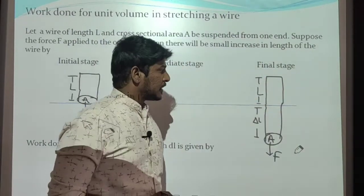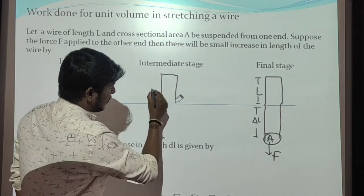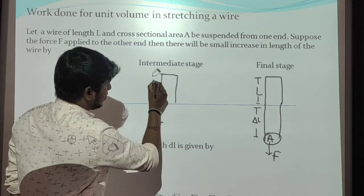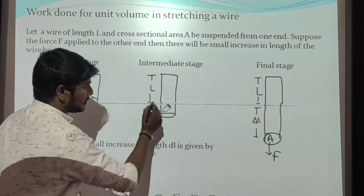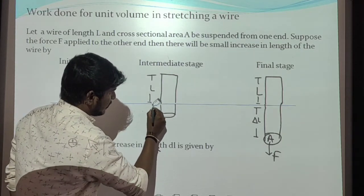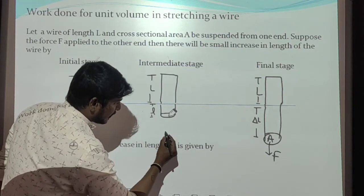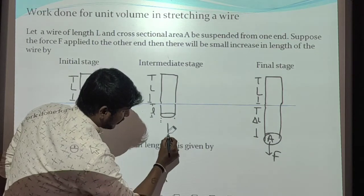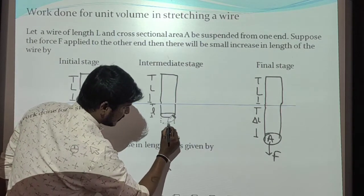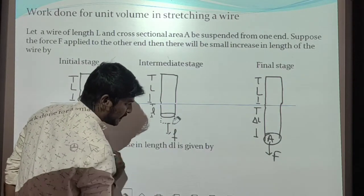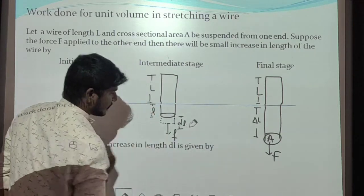To derive the expression for work done for unit volume, I am going to consider the intermediate stage. The wire has some initial length L. At the intermediate stage there is a small increase in length, denoted by small l. Now at this intermediate stage I am going to apply a small amount of force, small f, and after applying it there is a further increase in length which we denote by dL.